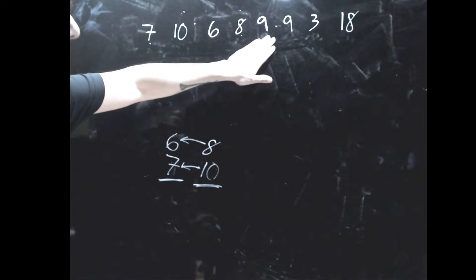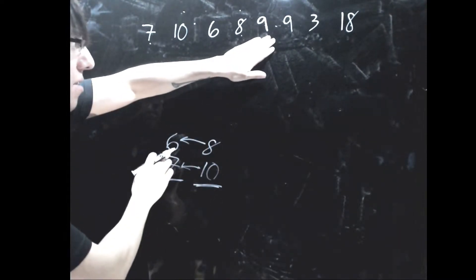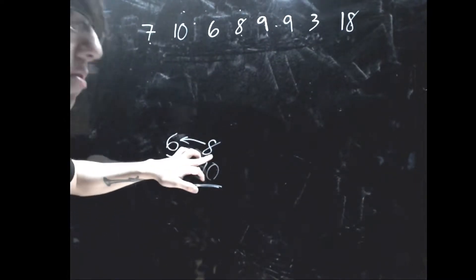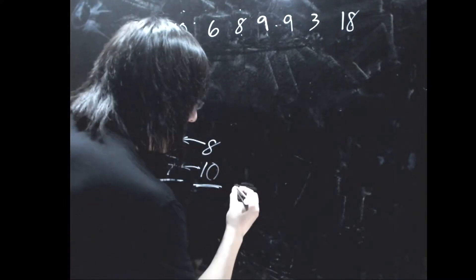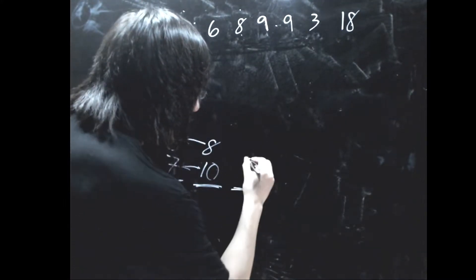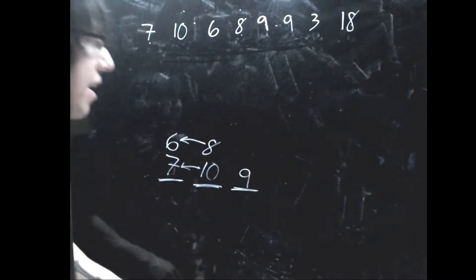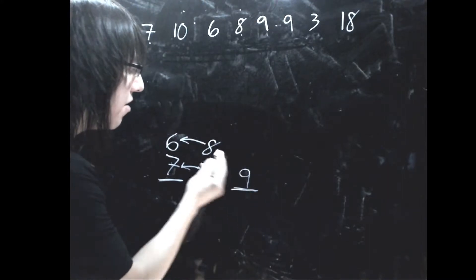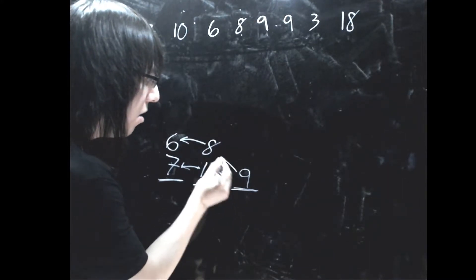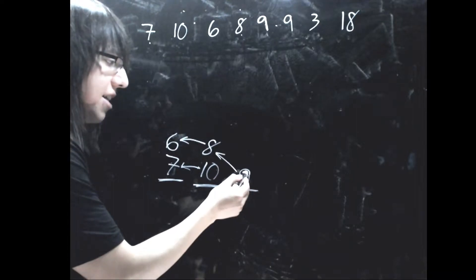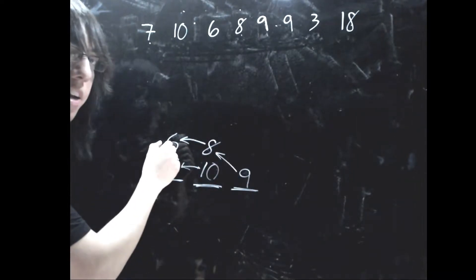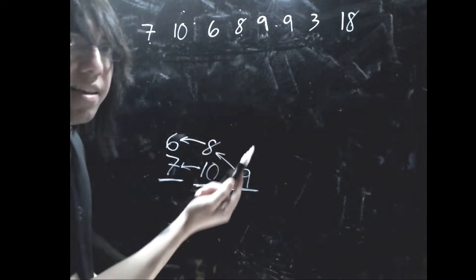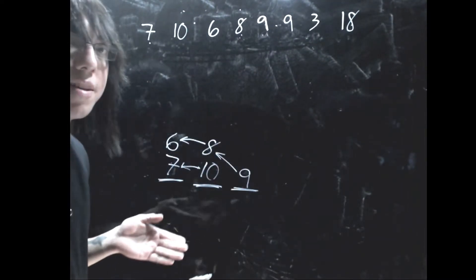Now we're at the number 9. I look at the top elements of the piles and ask: is 9 less than or equal to 6? No. Is 9 less than or equal to 8? No. Therefore I have to create a new pile. So 9 goes in my pile, and I draw an edge to the top of the previous pile, which is 8. If I traverse these edges — 9, 8, 6 — and reverse that, we get 6, 8, 9, which is our current longest increasing subsequence.